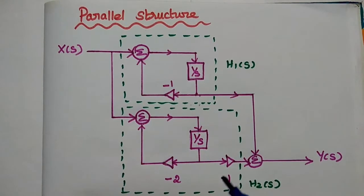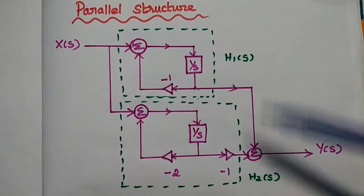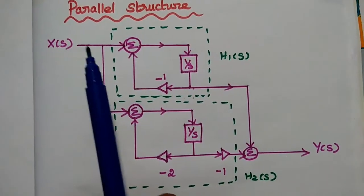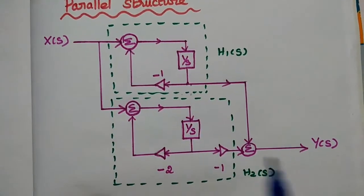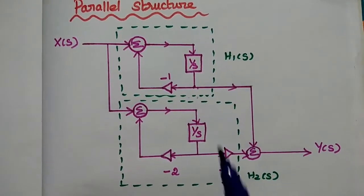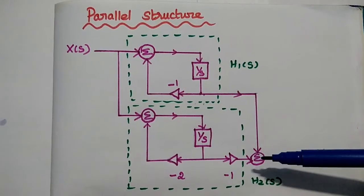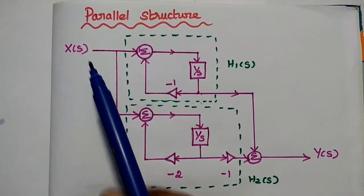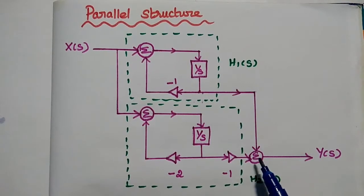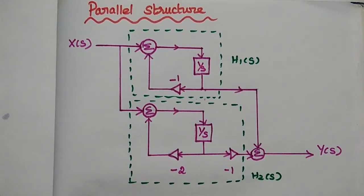Finally, the parallel structure is obtained by combining H1(s) and H2(s) in parallel. Parallel means the inputs are common, so X(s) is the common input for both transfer functions. The output is obtained by adding the outputs of the two transfer functions. This is the complete parallel structure for the given system.